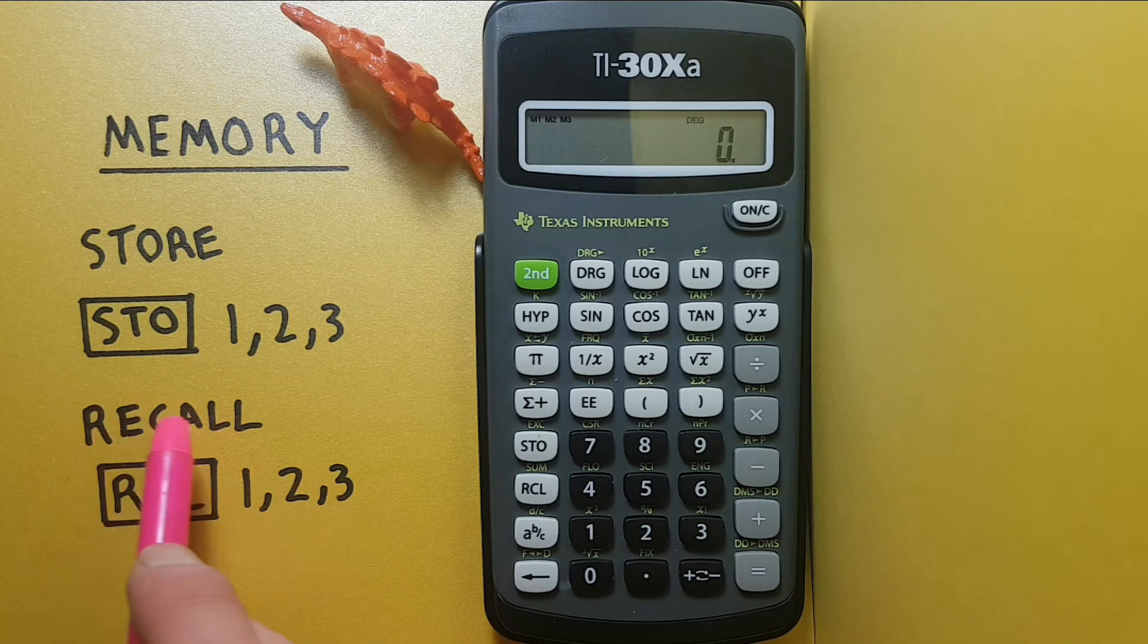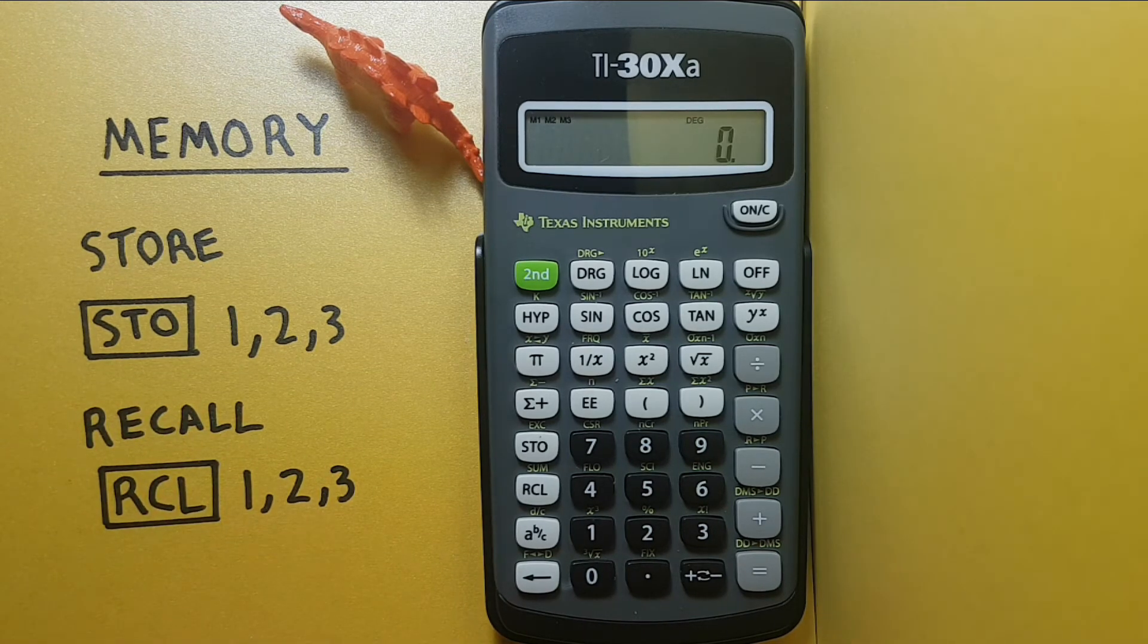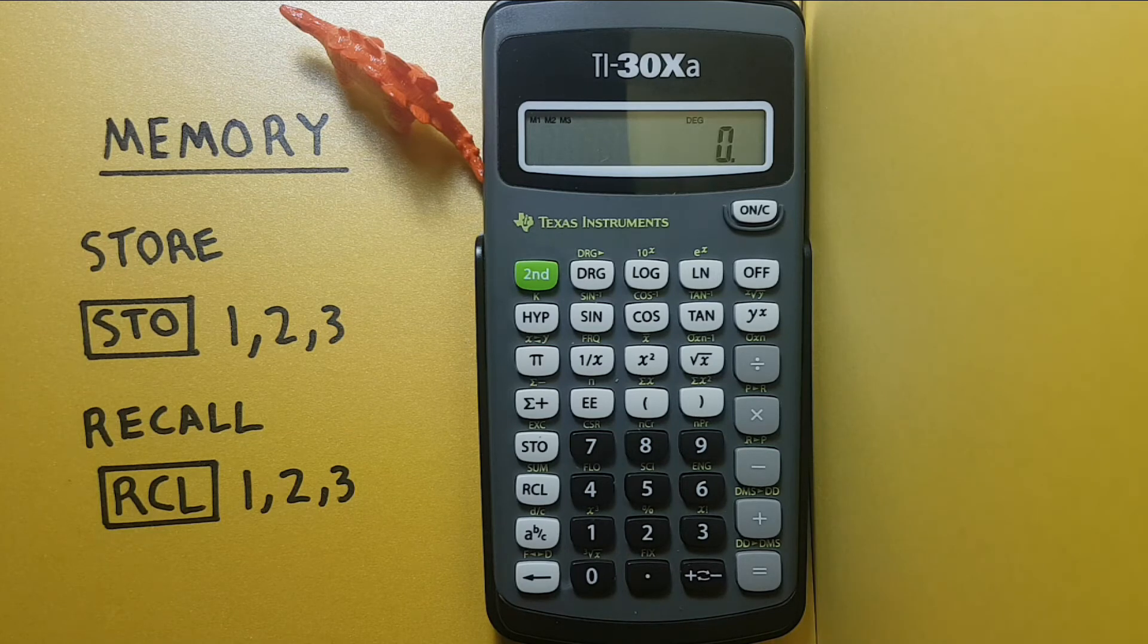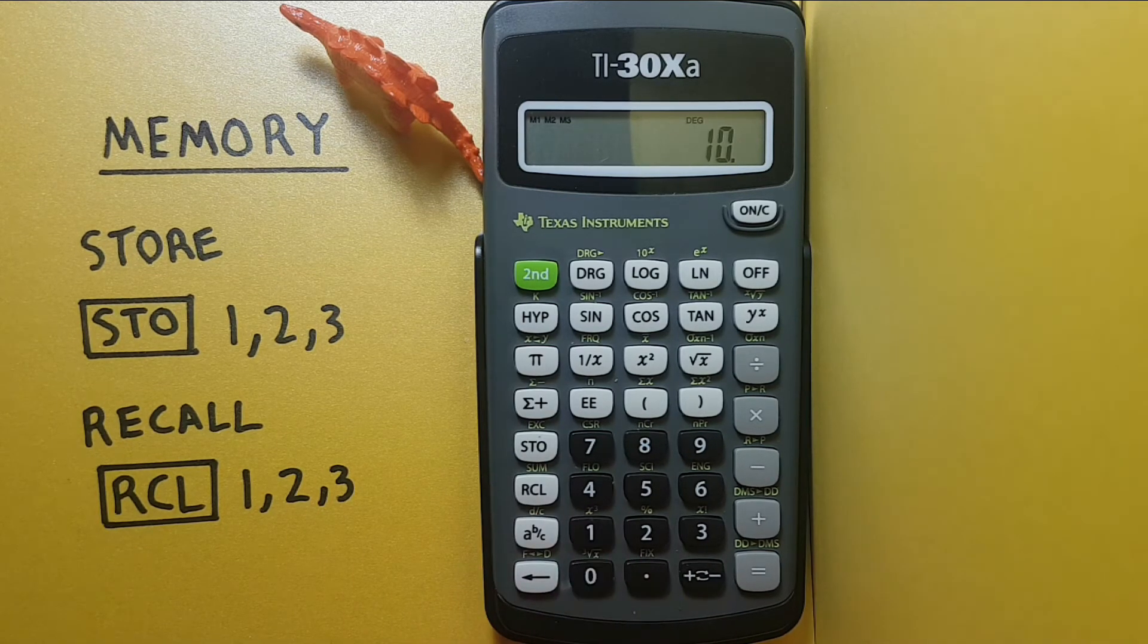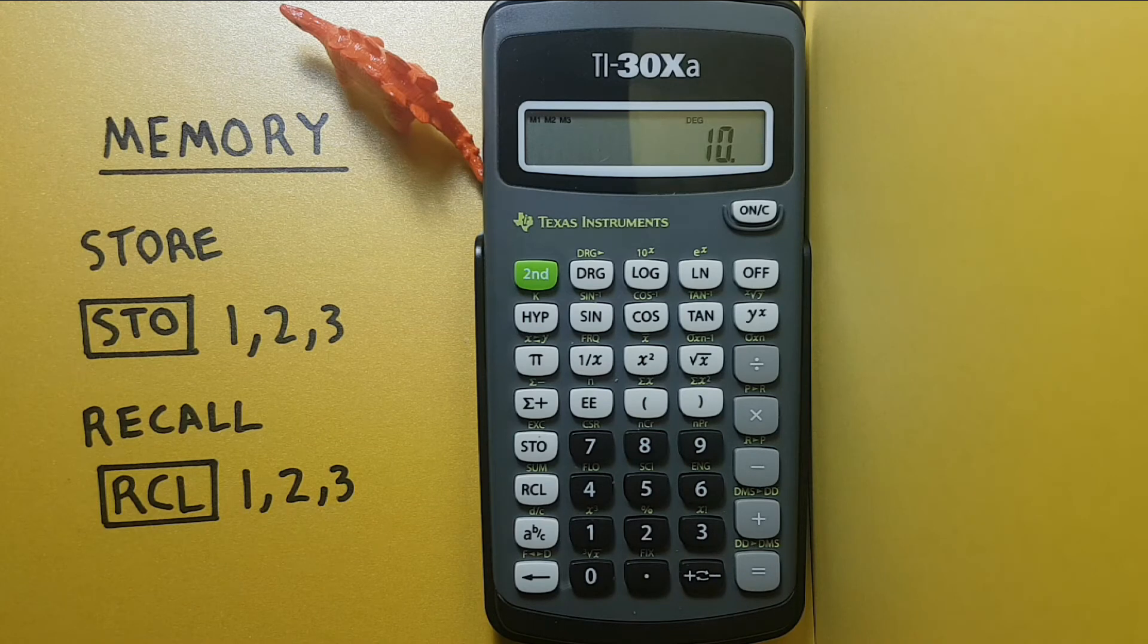We use the recall and choose the number. So if we want to recall the number from the first slot, we press recall 1 and we've brought back 10.